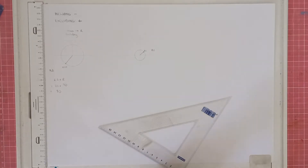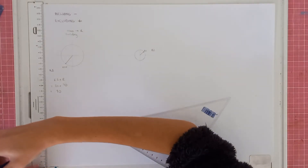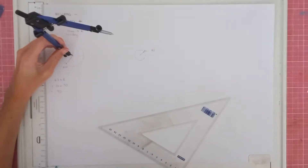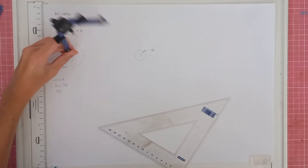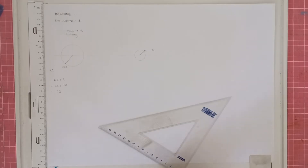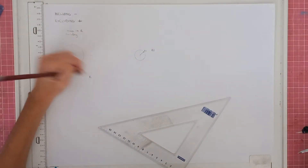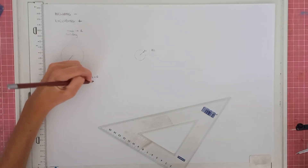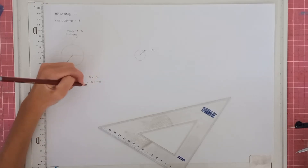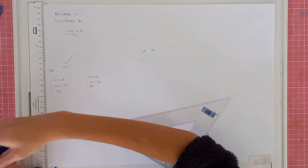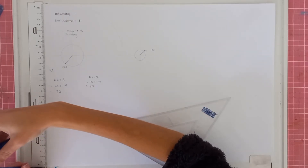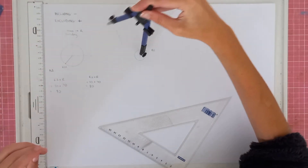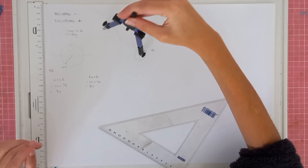Take a radius of 90 on your compass and draw a small arc on your page. Then for the second sum, r2 plus r: that's 10 plus 70, which gives us 80. Take 80 on your compass and make another arc.